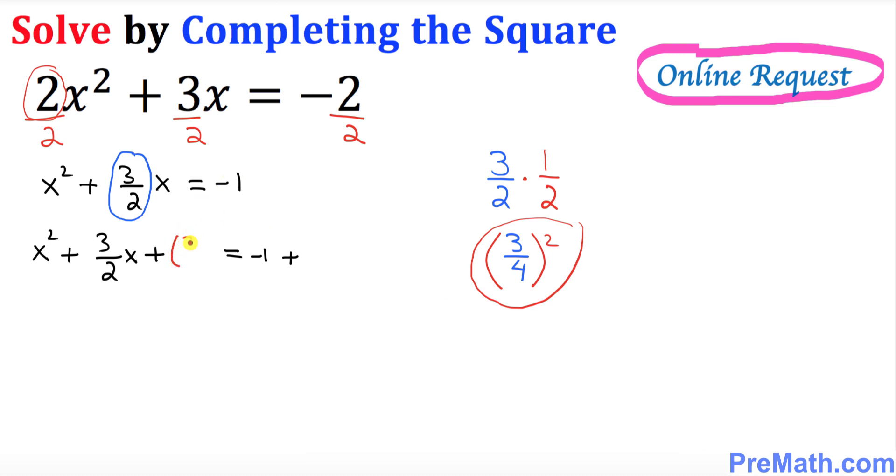I'm gonna put down 3 over 4, on 3 over 4 squared on this side, and 3 over 4 squared on this side. Now I want you to just focus on the left hand side over here. This represents a complete square of x plus 3 over 4 squared.